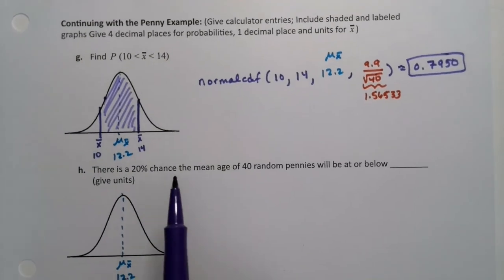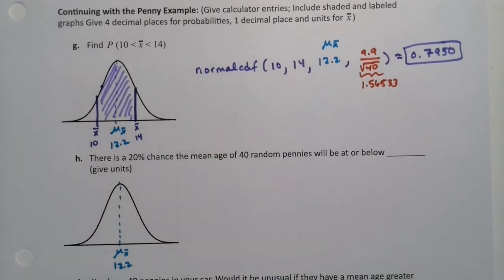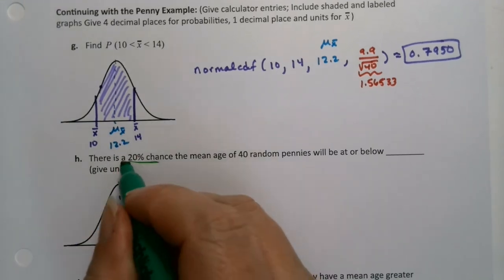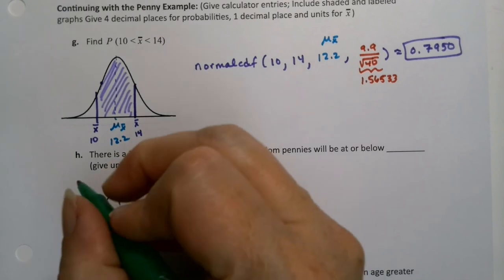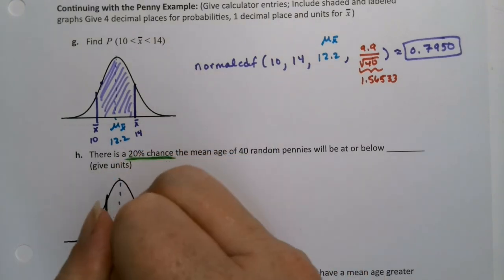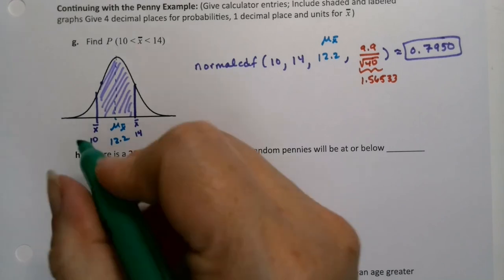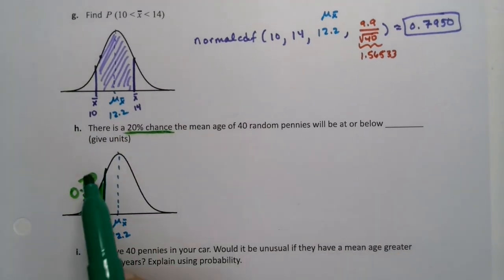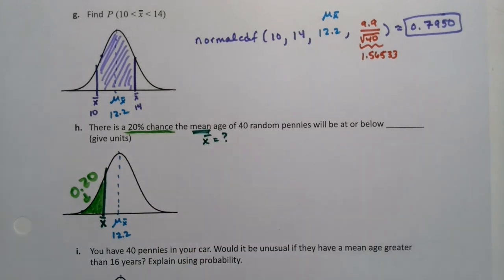Okay, so that's done. Now there is a 20% chance the mean of 40 random pennies will be at or below, 20% chance. So I'm giving you a probability, right? I'm giving you the area and it's 20% right here. And it's going to be at or below a specific value. So I'm looking for a value. Well, 20% is going to be somewhere in here. So I'm looking for this x bar. But I know that this area over here should be worth 20%. So there's a 20% chance of being at or below what value, what mean age, right? They're kind of telling you they want an x bar.